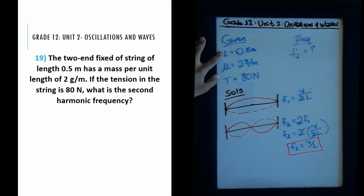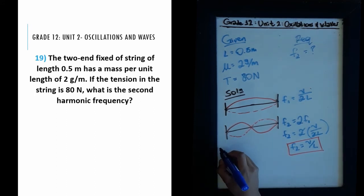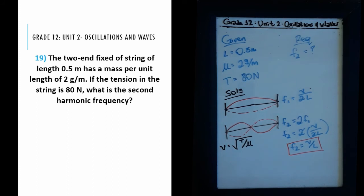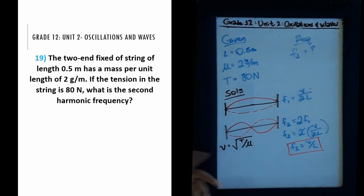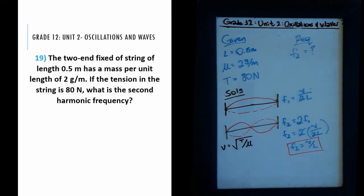We're given length but not speed. However, we can find speed using: v = √(T / μ). This makes physical sense — a tighter string has higher tension and higher wave speed, and a lighter string with less mass per unit length also increases speed.